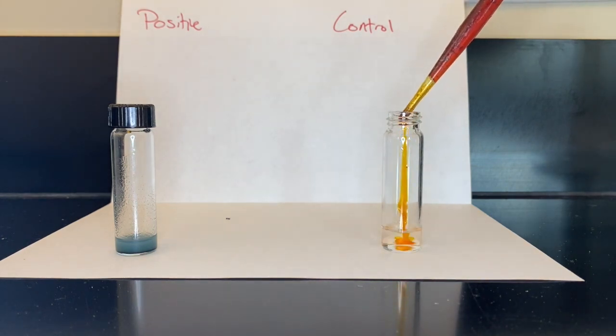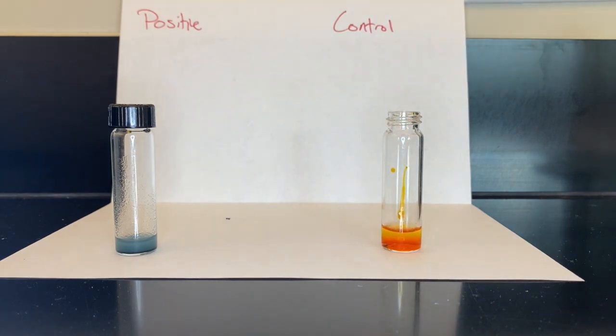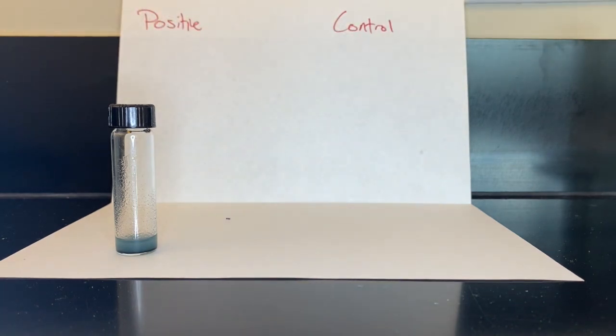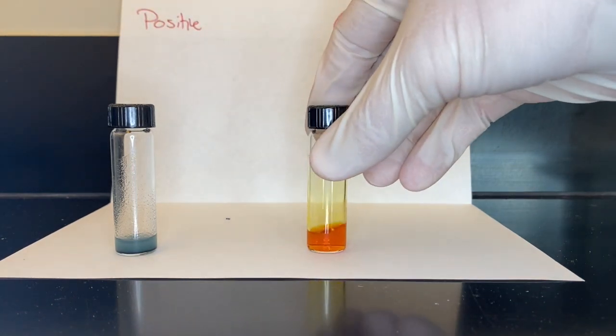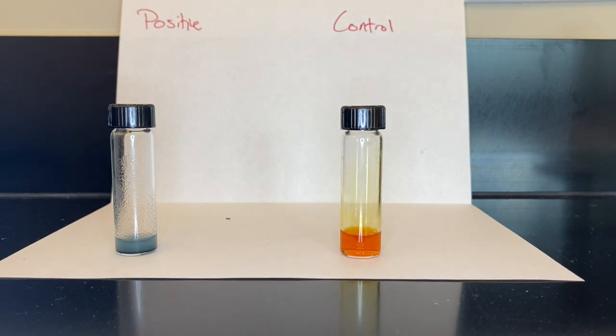For the control, we're going to add our reagent into acetone. You're just going to put the orange thing into a different liquid and it's going to stay orange. We can see that the positive vial had a reaction denoting that we have an alcohol present, and the control did not change color. That is a Jones reagent or chromic acid test.